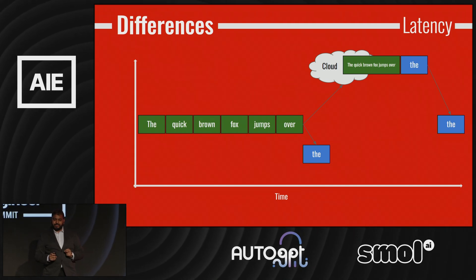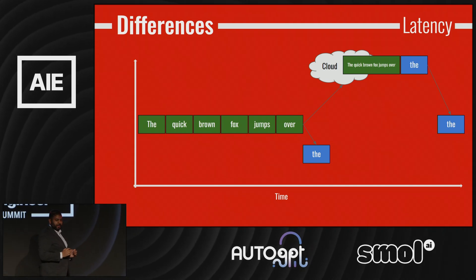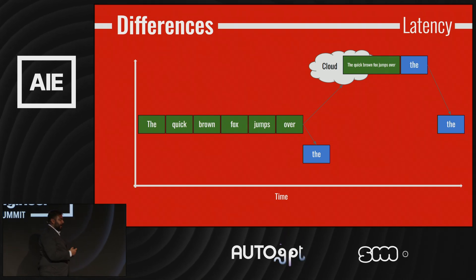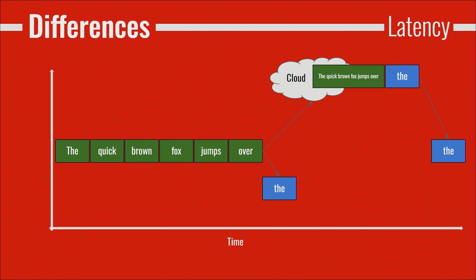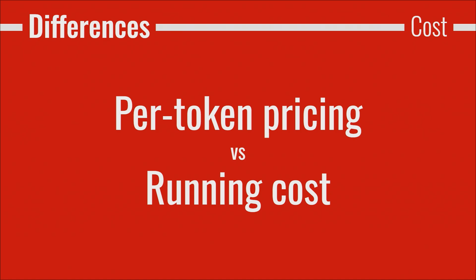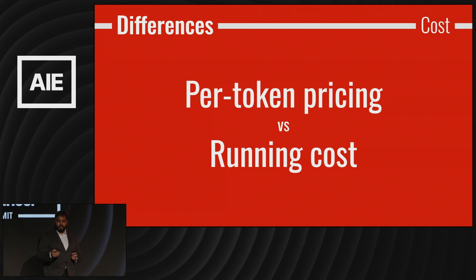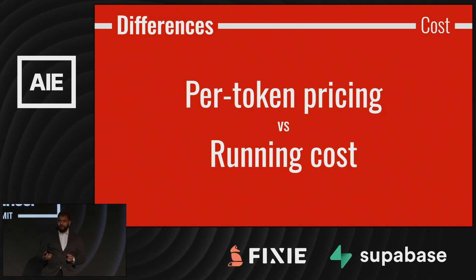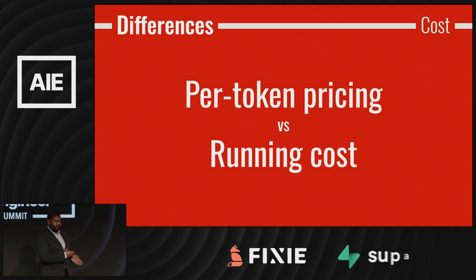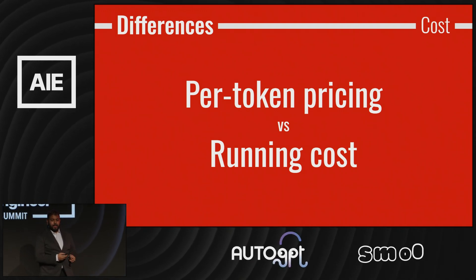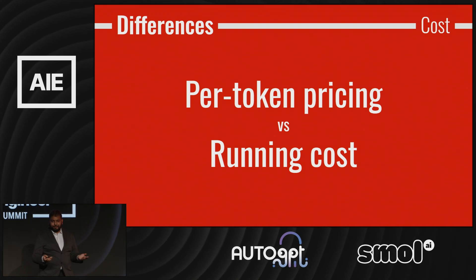Next up, latency. Cloud models need the full prompt before they can start inference, and you have to wait for the message back and forth. Local models can give you a response immediately — you can feed the prompt as you go along. This is very important for conversations where you want the model to be able to process what you're saying as you say it. And, of course, you can't escape talking about cost. The cloud vendors will charge you a per-token price. When running locally, it's entirely up to you how much it costs to run the machine. If the running cost of your model is less than the cost of running your workload through the cloud, you're going to make a profit. And if you're running on a machine you already own, that's basically free, right?